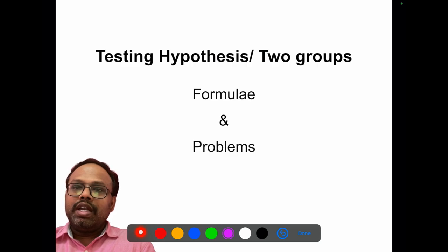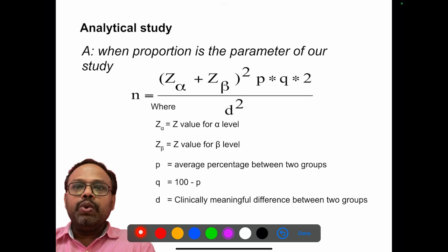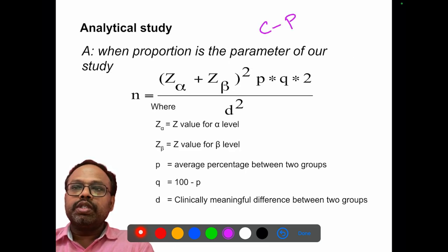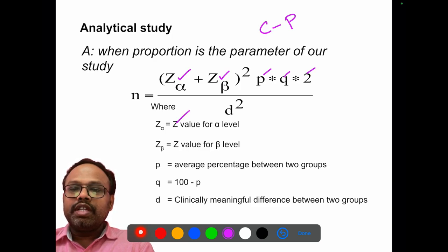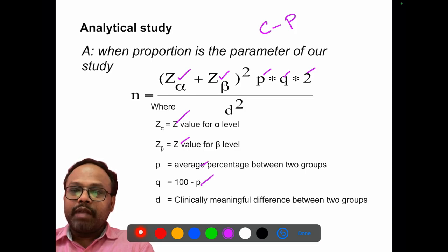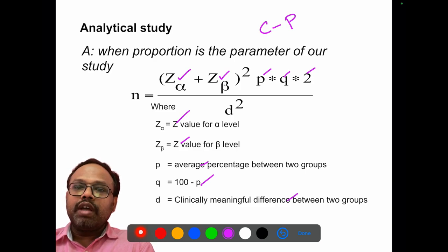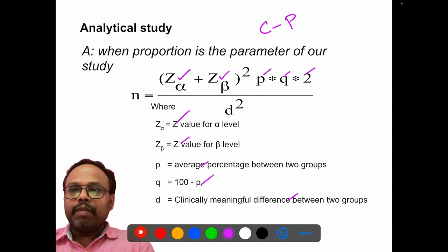Now we move on to testing of hypothesis, or comparison between two groups. When doing a comparison of proportion, the formula is: n = (Z-alpha + Z-beta)² × P × Q × 2 / D², where Z-alpha is the z-value at the alpha level, Z-beta is the z-value at the beta level, P is the average percentage between two groups, Q is 100 minus P, and D is the clinically meaningful difference between two groups. When comparing more than two groups, take the two groups with the minimal difference for the sample size calculation.